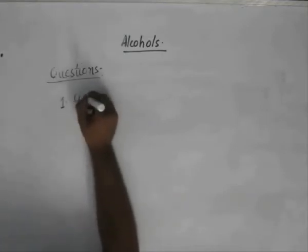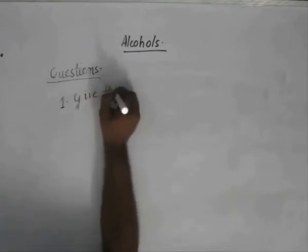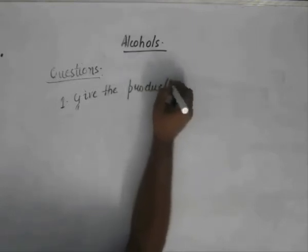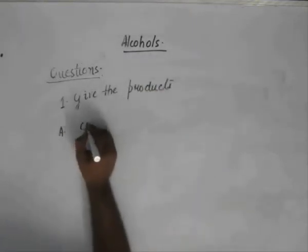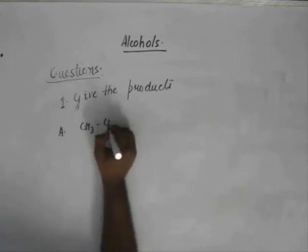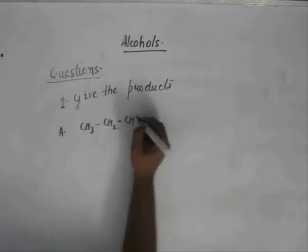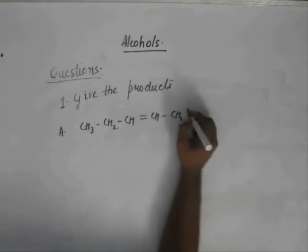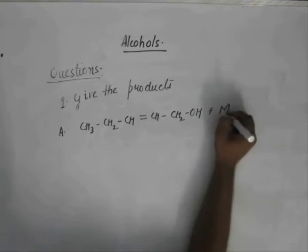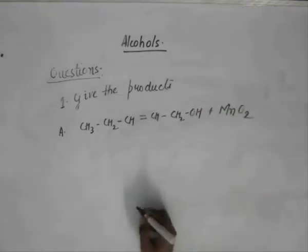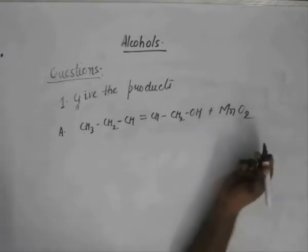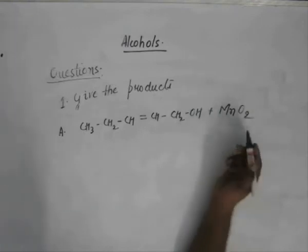Give the products. We have CH3-CH2-CH double bond CH-CH2-OH plus MnO2. MnO2 is again oxidation reagent. It tries to oxidize alcohols.